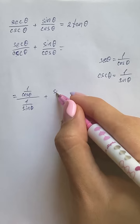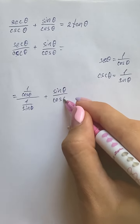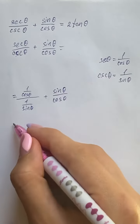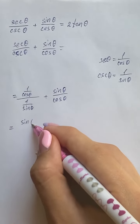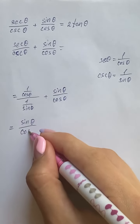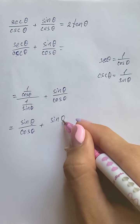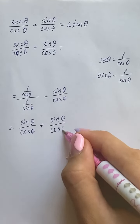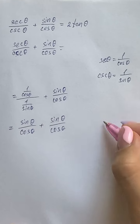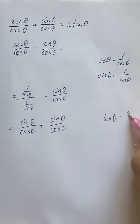Plus sine of theta over cosine of theta. So now we have sine of theta over cosine of theta, plus sine of theta over cosine of theta. And we know that tangent of theta equals sine of theta over cosine of theta.